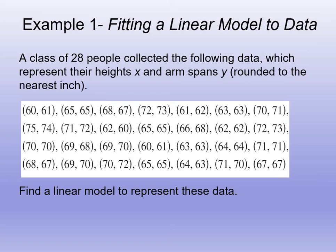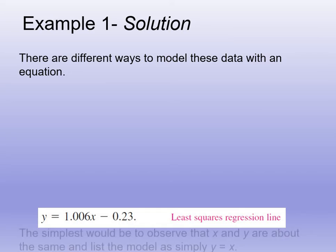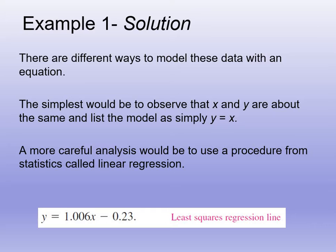And then you're going to hit enter. Once you do that, it'll tell you that Y equals AX plus B. And then it tells you what A is and what B is. You should get something very similar to the equation that's here. So here, Y equals 1.006X minus 0.23.